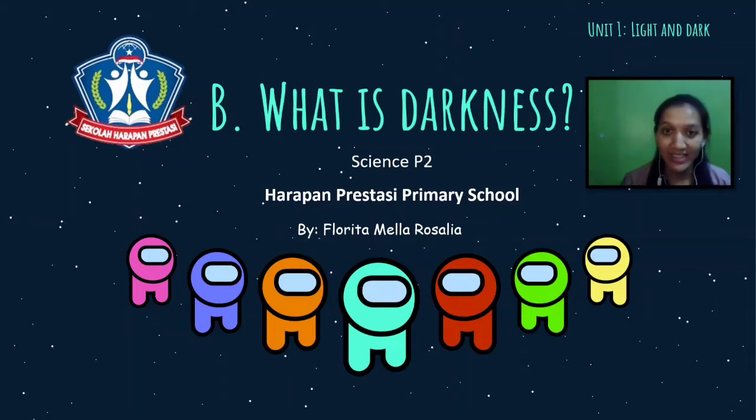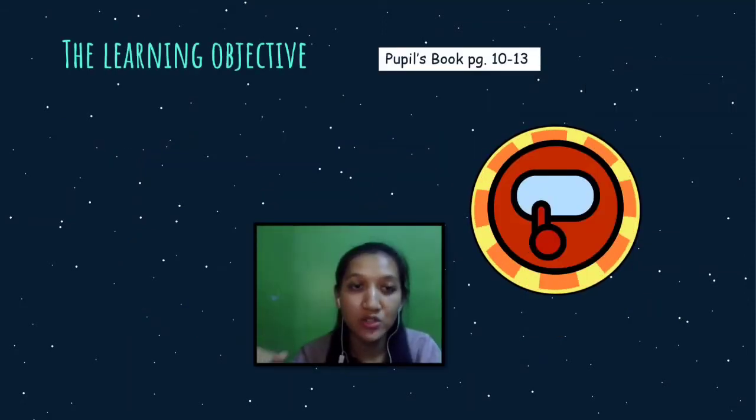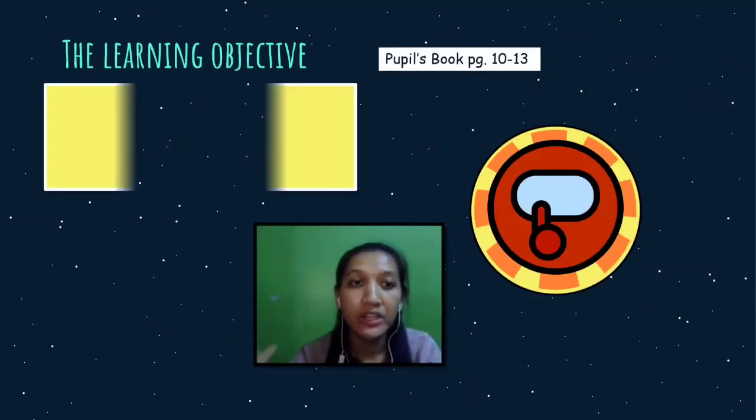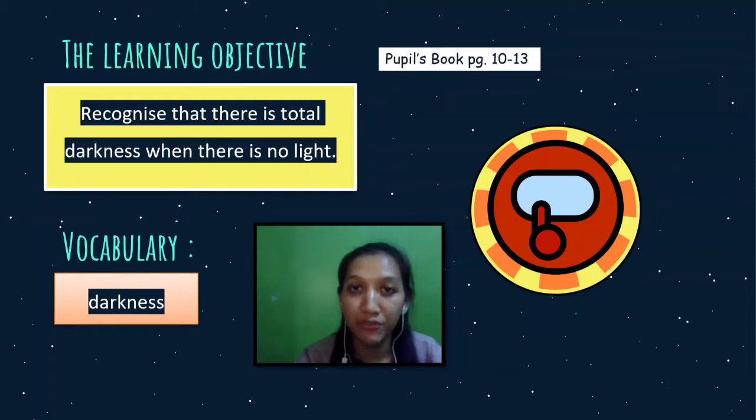So, do you want to know? Let's start! Before we start, let's talk about the learning objective. The students will recognize that there is total darkness when there is no light. And the vocabulary you can find in this topic is darkness.